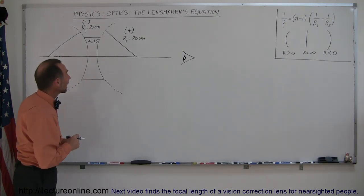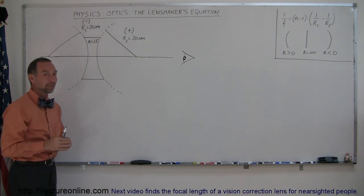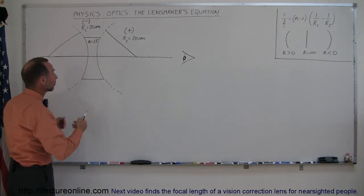Our next example is a diverging lens. We know right away by its shape that it's a diverging lens, but let's see what the focal length of this lens is based upon its parameters.